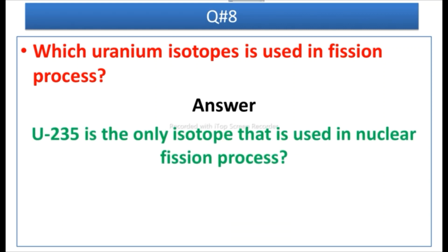Question number eight: Which uranium isotope is used in fission process? It's an important question. Answer: Uranium-235 is the only isotope that is used in nuclear fission process.